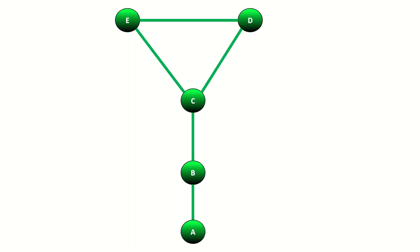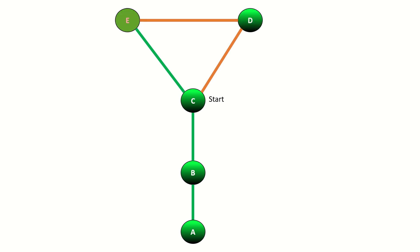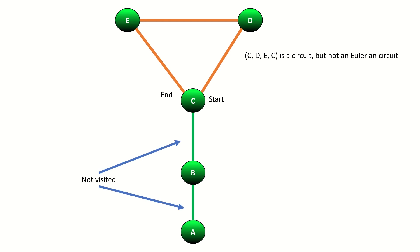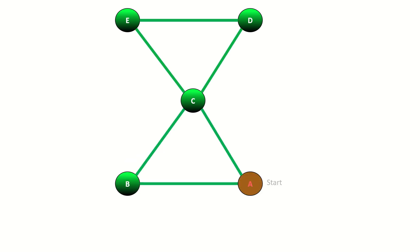Let's see some more examples now. This was an Eulerian trail, but not a circuit, because it ended on a different vertex than it started from. This is a circuit, but it is not an Eulerian circuit, because it doesn't visit every edge in the graph. Finally, here you'll see an example of an Eulerian circuit in a graph, visiting every edge exactly once.